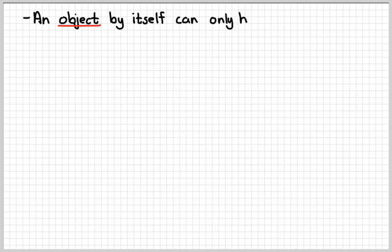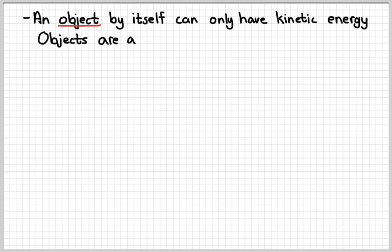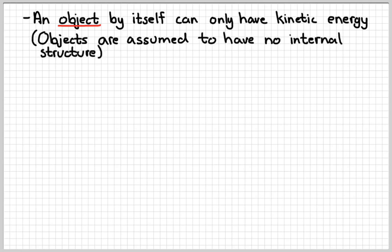It's important to note that an object by itself can only have kinetic energy. If we want to have other kinds of energies, then we have to have a system. We pretty much assume that objects don't have any internal structure to them. So when I say find the kinetic energy of that object that has a mass of 4 kilograms, I don't really worry about what it's made of. I know it's made of atoms or molecules of some kind, but I treat the object like it doesn't have anything internal to it.